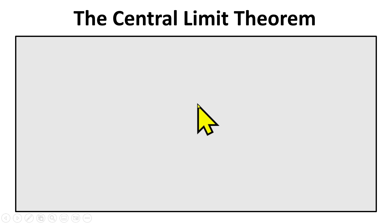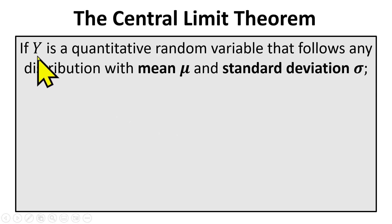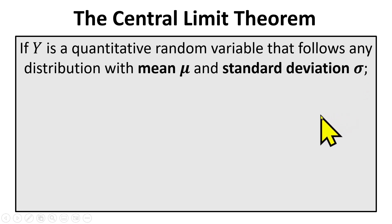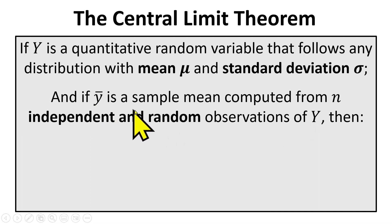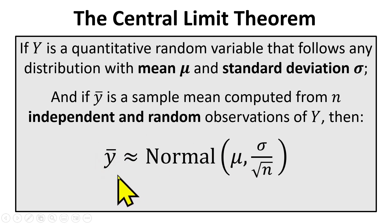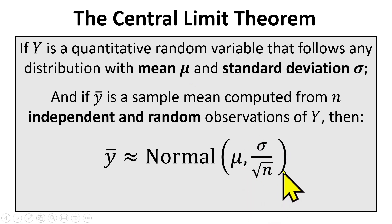Let's review this phenomenon that we call the central limit theorem. The idea is this: if y is any quantitative random variable that follows any distribution — it doesn't matter what it is — as long as we know what the mean of that distribution is and what its standard deviation is, and if y-bar is a sample mean computed from n independent random observations, then the distribution of that sample mean is approximately normal. Its center is the same as the center for individual measurements, and it has a standard deviation which is smaller because we divide by the square root of the sample size.